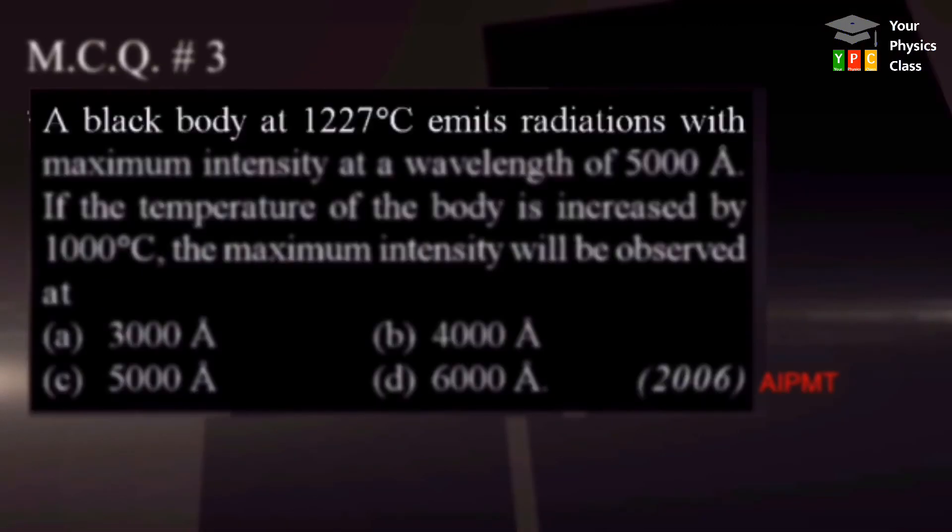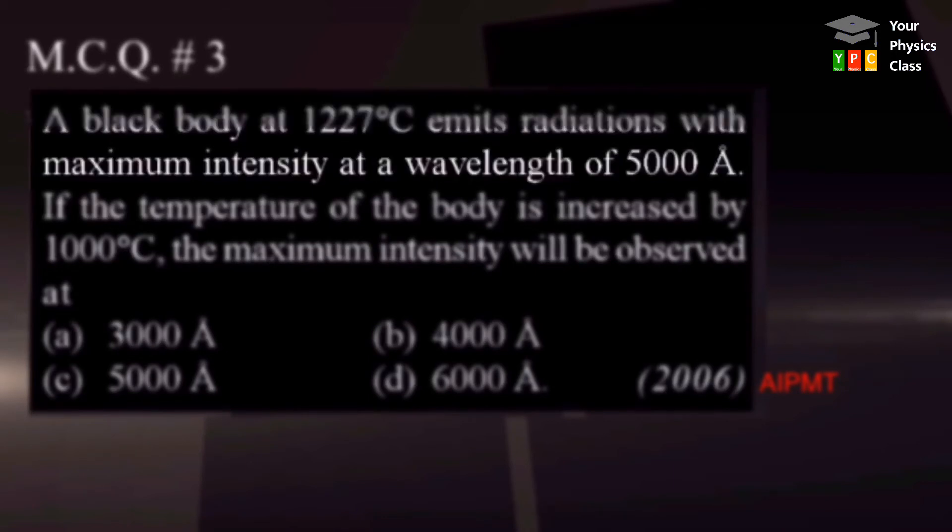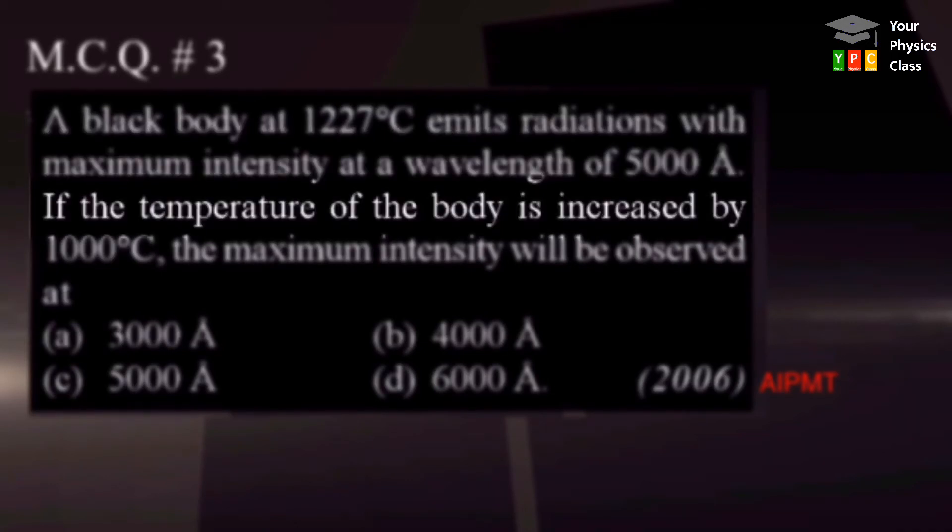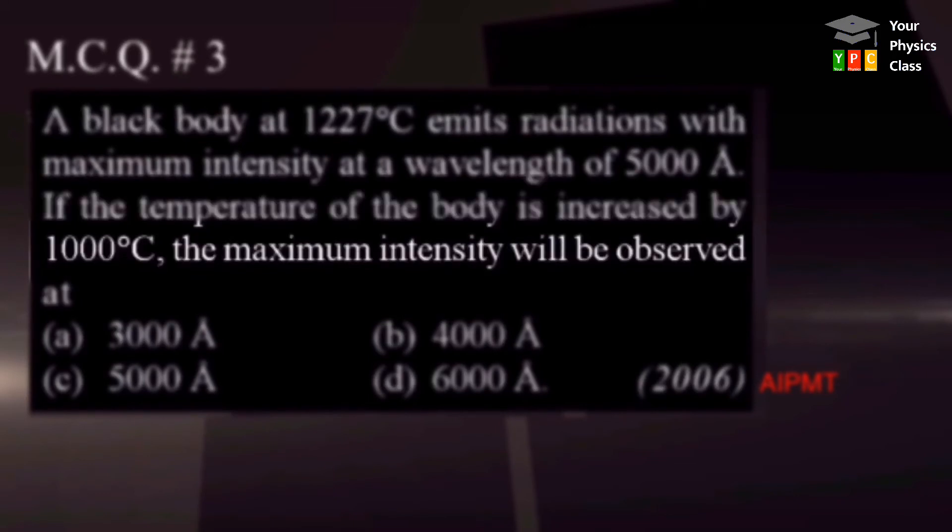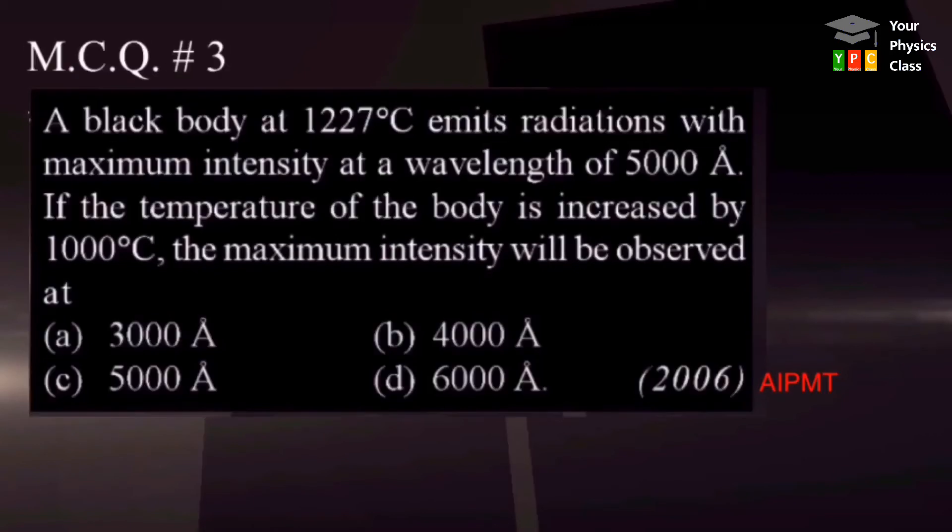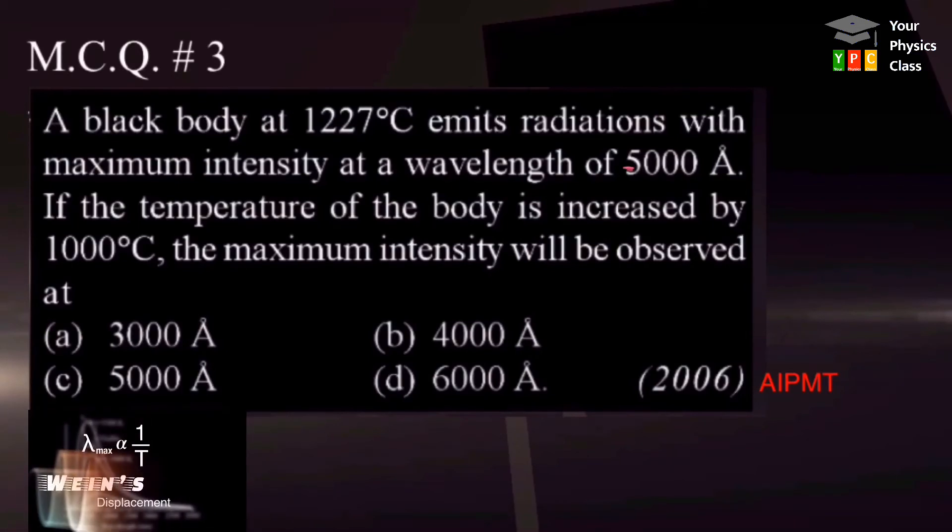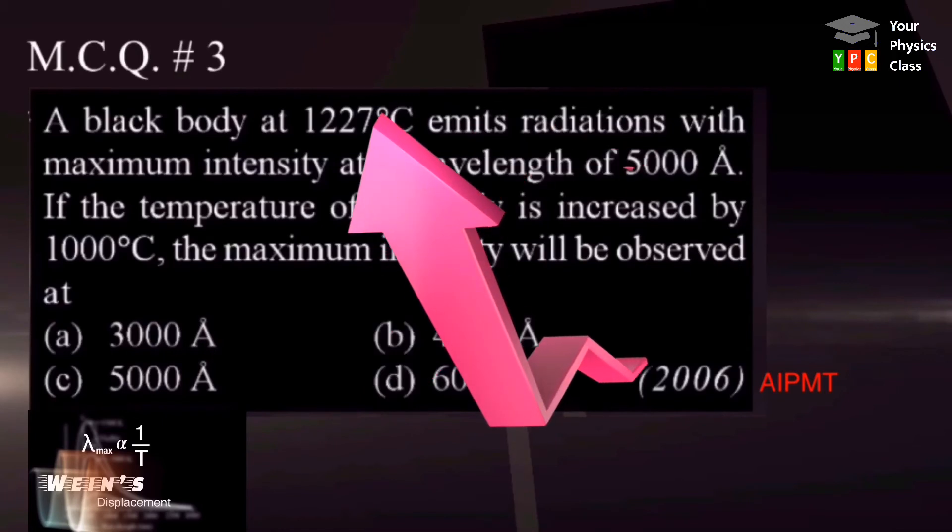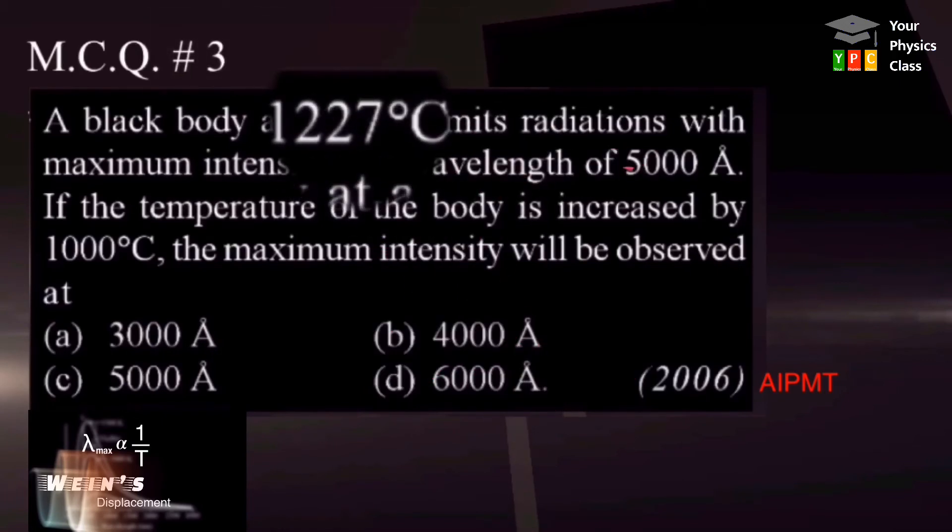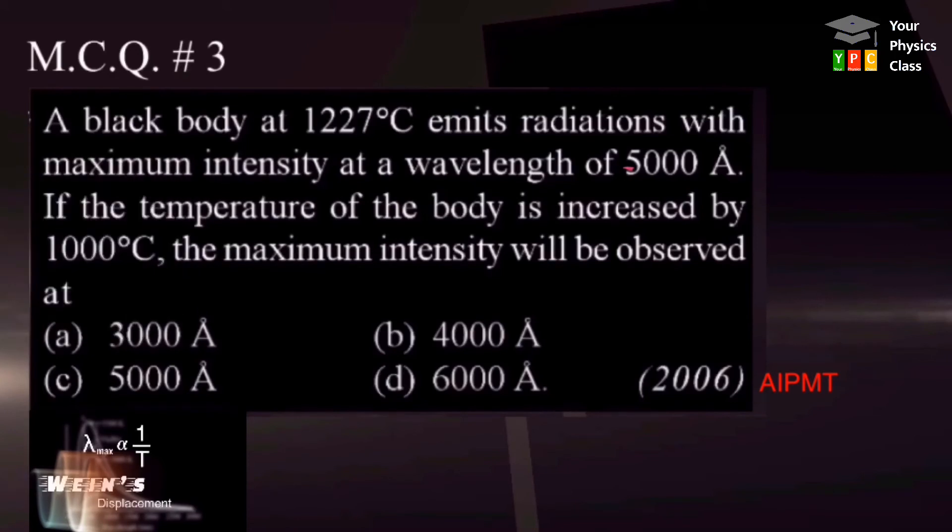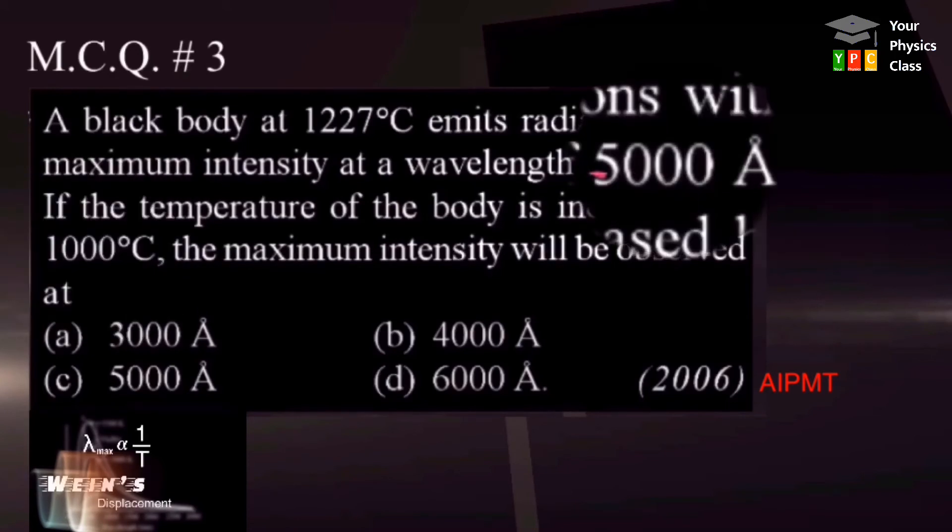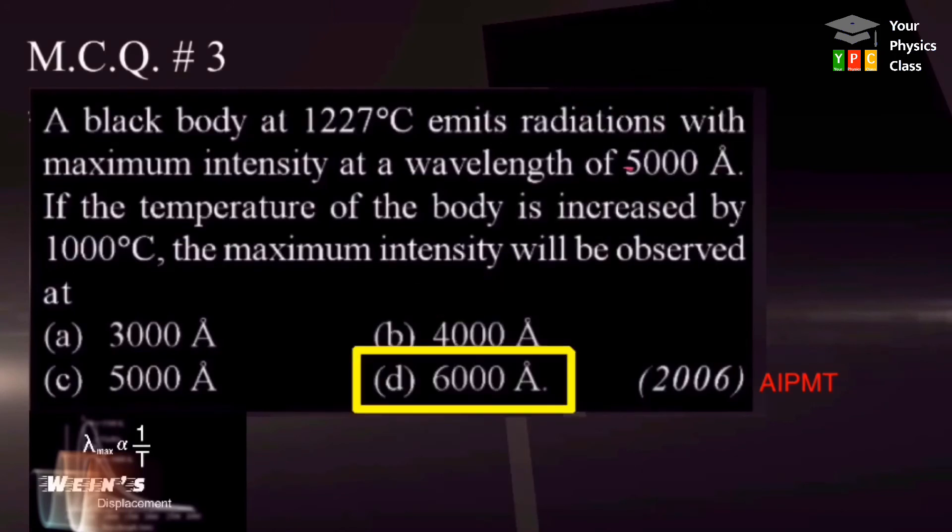A black body at 1227 degrees Celsius emits radiation with maximum intensity at wavelength of 5000 angstrom. If the temperature of the body is increased by 1000 degrees Celsius, the maximum intensity will be observed at: four options are given on screen. We have to pick up the correct option. Now recall Wien's displacement law. As temperature decreases, wavelength increases. Here, temperature is decreased to 1000 degrees Celsius. Hence, our wavelength should be greater than 5000 angstrom. So, D is the correct answer.